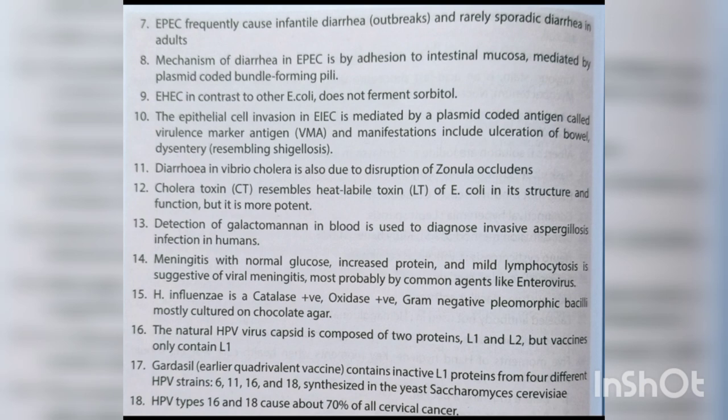EHEC, in contrast to other E. coli, does not ferment sorbitol. Epithelial cell invasion in EIEC is mediated by a plasmid-coded virulence marker antigen, and manifestations include ulcerations of the bowel and dysentery resembling shigellosis. Diarrhea in Vibrio cholerae is also due to disruption of zonula occludens. Cholera toxin resembles heat-labile toxin of E. coli in structure and function but is more potent.